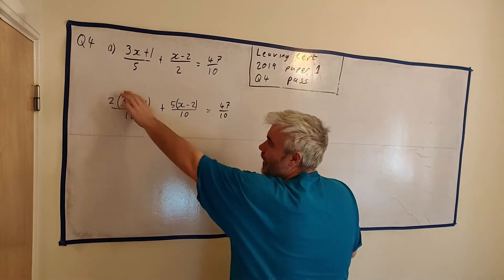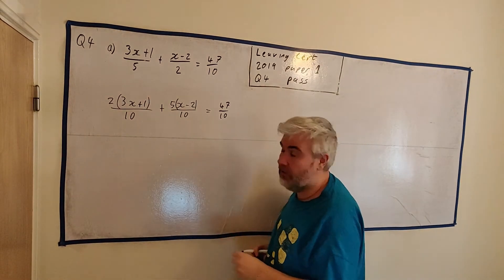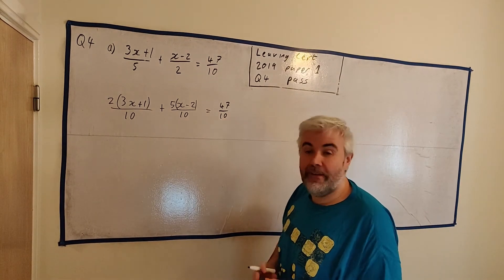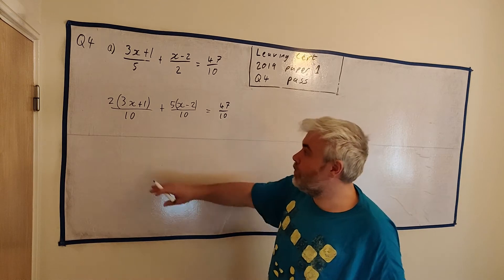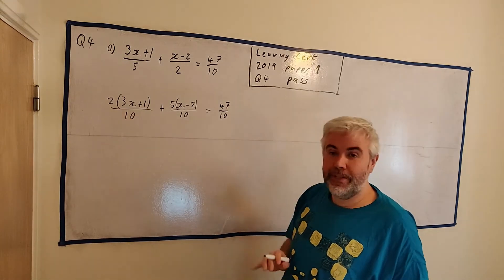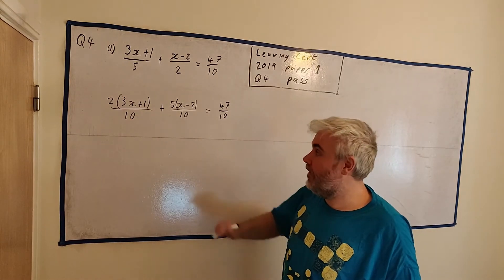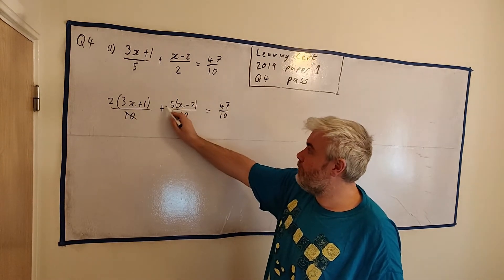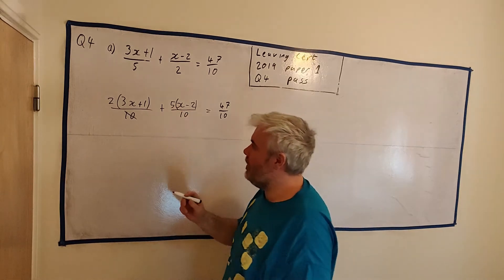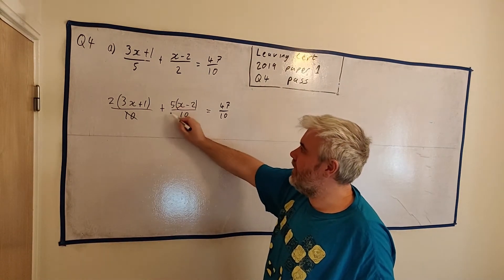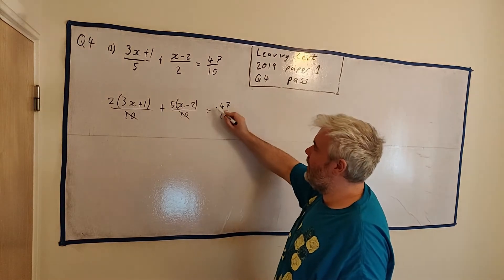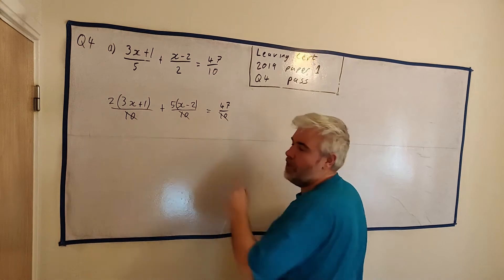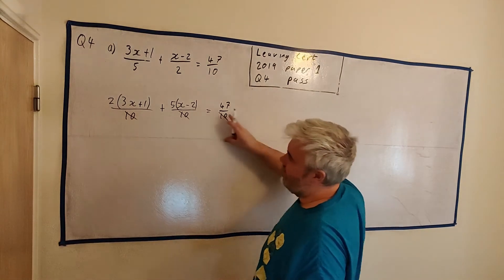We could just add the top rows together now since they have the same denominators. But I think it's easiest to multiply everybody by 10. Multiply every term on the left by 10 and every term on the right by 10. That means the 10s cancel with the denominators and disappear. It's fair — we multiplied both sides by the same number, so it stays balanced. That just leaves the numerators.